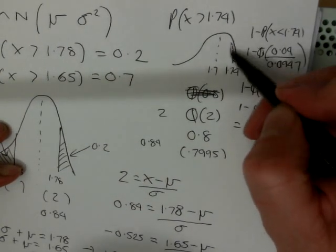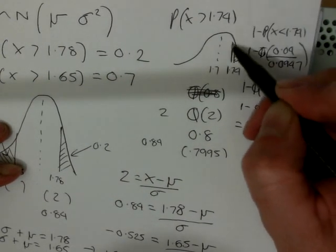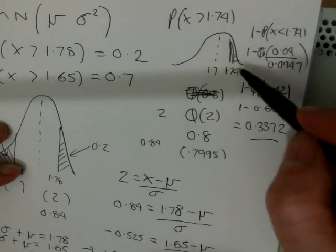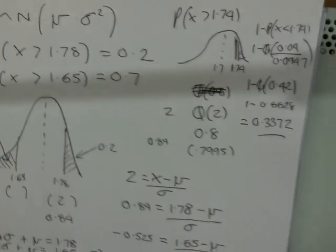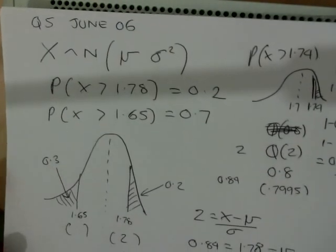And that fits with the question, because we want it to be over 1.74. So, it's certainly not going to be over 0.5. It's going to be something that's less than 0.5. There's your answer, 0.3372. So, that's the full solution to question 5, June 06.